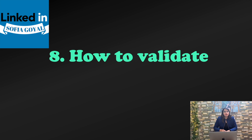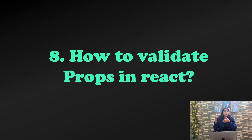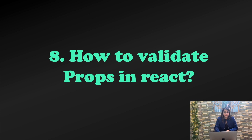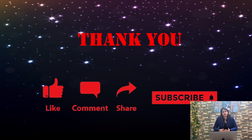The next question is: how do you validate props in React? For example, a person component might have props like name, last name, address, and phone number. You want to validate the types — phone number as a number, others as strings — and specify which are mandatory. You need to know the method for providing these validations.